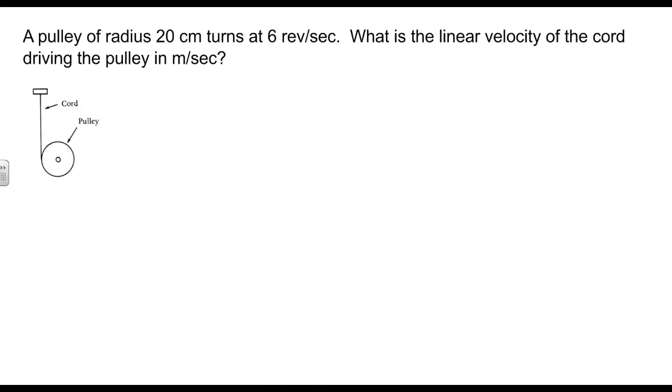Here's a similar problem. We've got a pulley of radius 20 centimeters. This length here is 20. It turns at 6 revolutions per second. And we want to know the linear velocity of the cord. That's kind of like the seat at the end of the Ferris wheel. The cord is straight, so we're looking for its linear velocity. Again, I need the angular velocity.